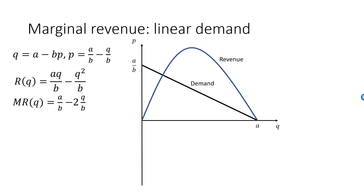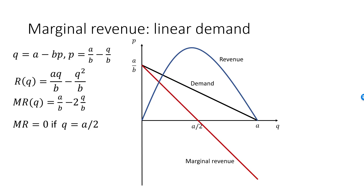Therefore, MR will intersect the Q axis at Q equal to A over 2. Marginal revenue is zero when Q is equal to half of its maximum value. The price elasticity of demand is equal to minus one at this quantity.